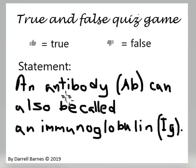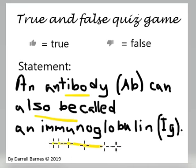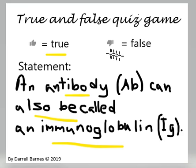True or false: an antibody (AB) can also be called an immunoglobulin (Ig). Thumbs up is true, thumbs down is false.